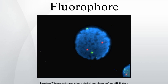Excitation energies range from ultraviolet through the visible spectrum, and emission energies may continue from visible light into the near-infrared region. Main characteristics of fluorophores include maximum excitation and emission wavelength, which correspond to the peak in the excitation and emission spectra.